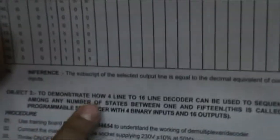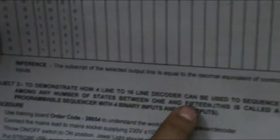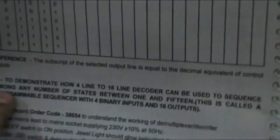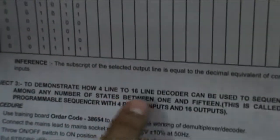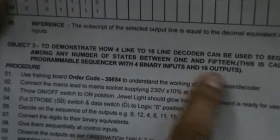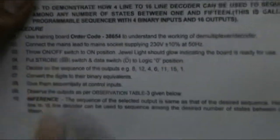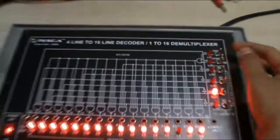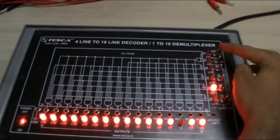Now we move on to the third experiment which is to demonstrate how 4 line to 16 line decoder can be used to sequence among any number of states between 1 and 15. This is called a programmable sequence with 4 binary inputs and 16 outputs. Put strobe SB switch and data switch to logic 0.